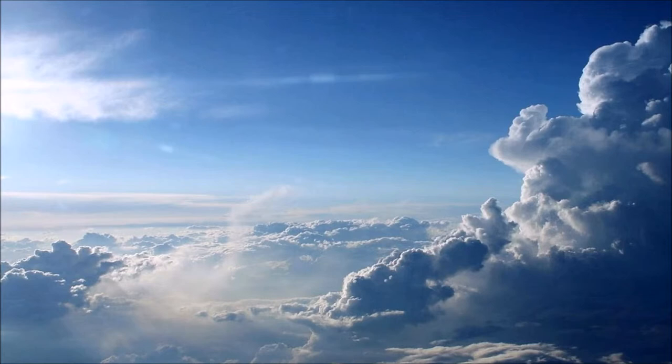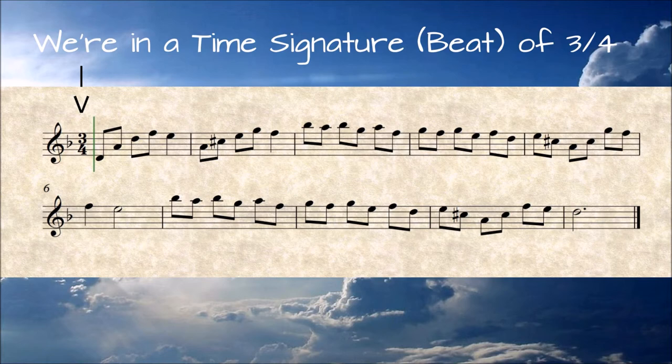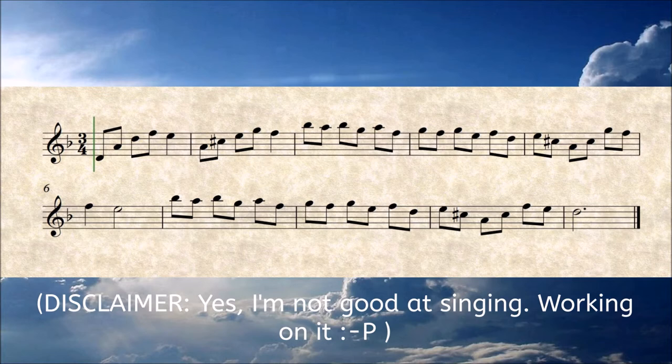Let's take a simple exercise that I wrote as an example. First, we establish the clef we are using, which in this case is a treble clef. Then, we establish the beat, which in this case is three-fourths. Now, taking a slow tempo, we can try to read the music following the correct rhythmic values.